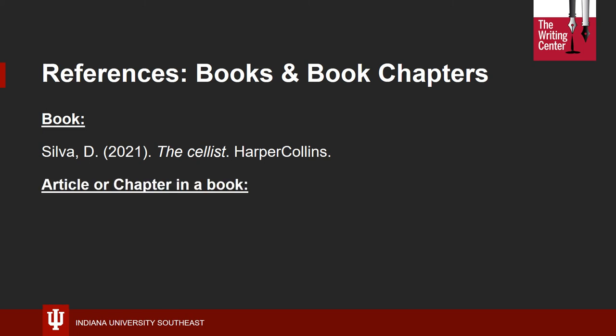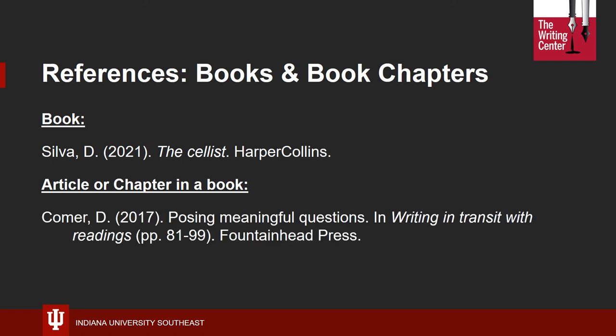If you're citing a chapter from a book, or an article or piece from an anthology, use this citation style. As with the whole book citation, you'll first list the name of the author and the year of publication. Next, write the name of the chapter or anthology piece — this is neither italicized nor in quotation marks, and only the first word is capitalized. Then write the word "in" and provide the full name of the book. In parentheses, place the page numbers of the chapter, and conclude the citation by stating the name of the publisher.